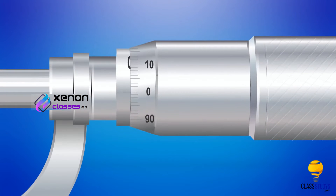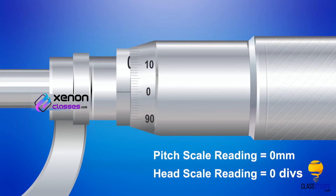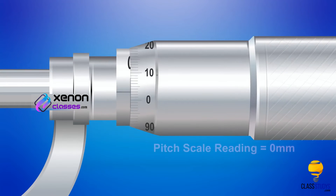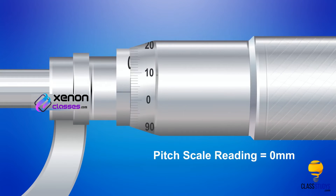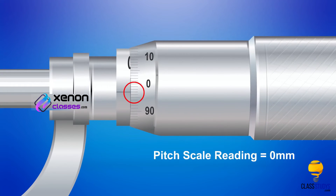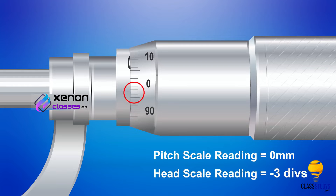Zero error is zero if the zero of the pitch scale coincides with the zero of the head scale. Error is positive if it coincides with numbers above the zero of the head scale. Error is negative if it coincides with a number below the zero of the head scale.